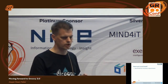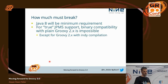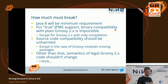So how are we going to get there? It's unclear how much must break. We're talking Java 8 as a minimum requirement — I don't think that's controversial, but it is a breaking change. We need to break binary compatibility to be able to support the module system. We could still be source-code compatible with Groovy 2.x code if we keep the same bootstrap methods. We should try to keep most source-code compatibility unharmed, but if things move, we might have to break that. Overall, legal Groovy 2.x programs should still be legal Groovy 3.x programs, I think.